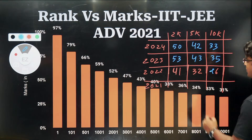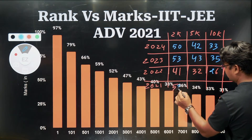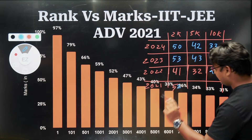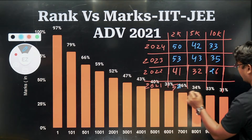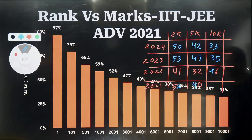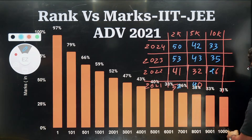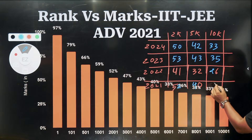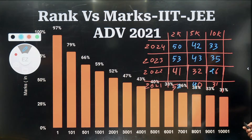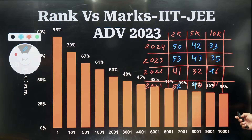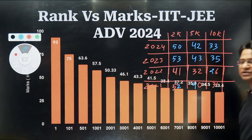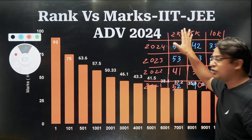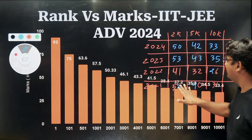For 2021: the 2k rank was obtained at 52%, the 5k rank at 40%, and the 10k rank at 31%.